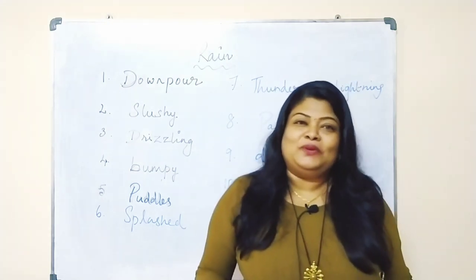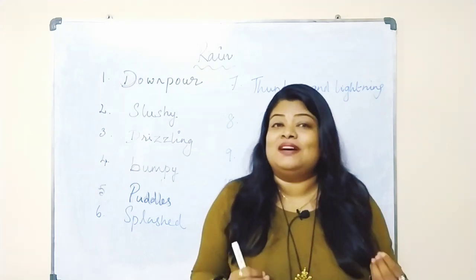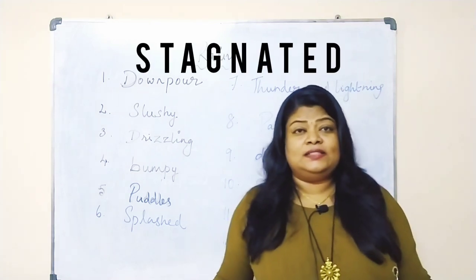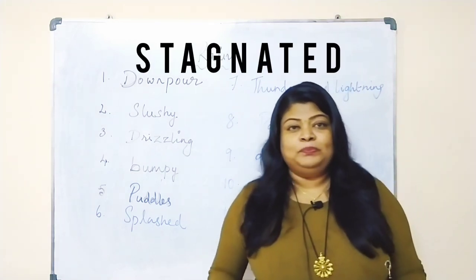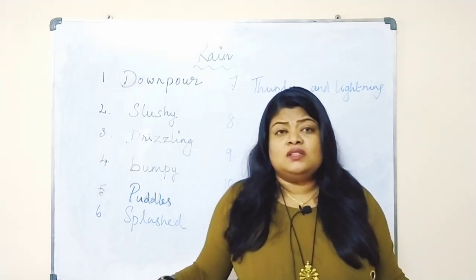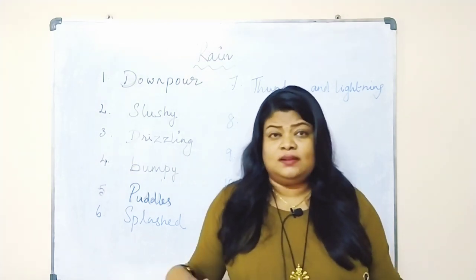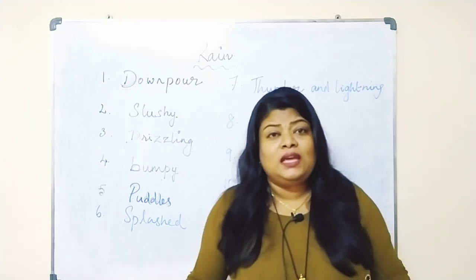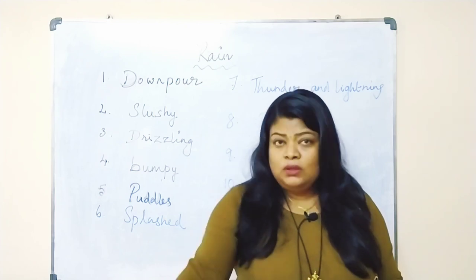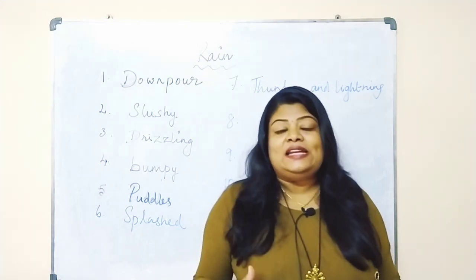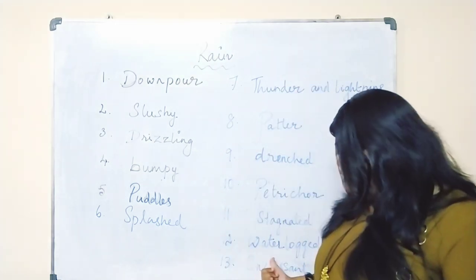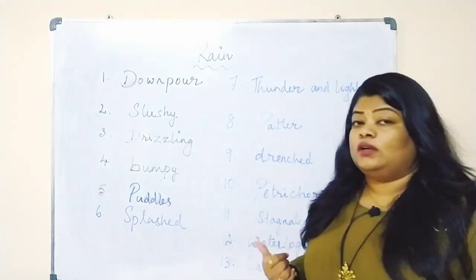The next word is 'stagnated.' After a heavy downpour, water doesn't flow away but stands still — here and there. That standing water is called stagnated water. We say: 'After the heavy downpour last night, the water is completely stagnated here and there. We have to be really careful when we travel on such roads.' So stagnated means water that is standing still — thanni nikaratha.